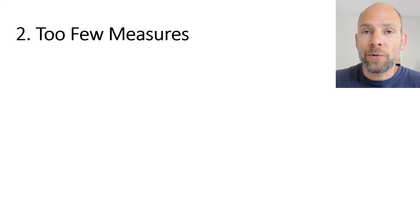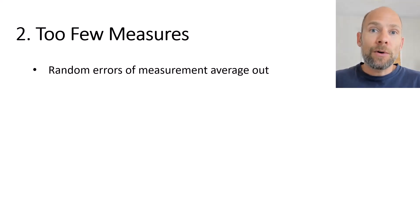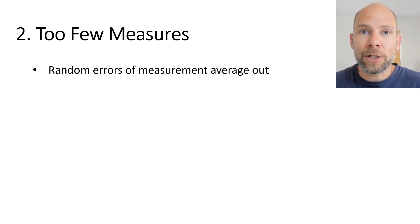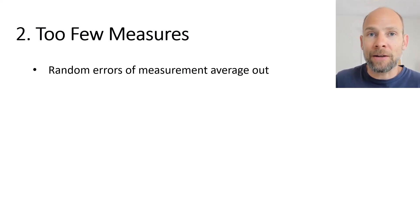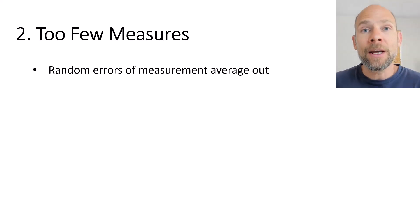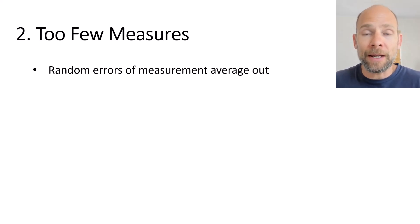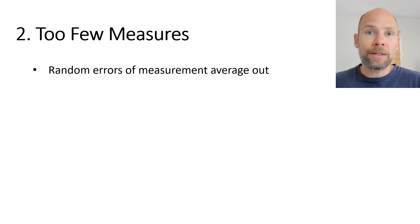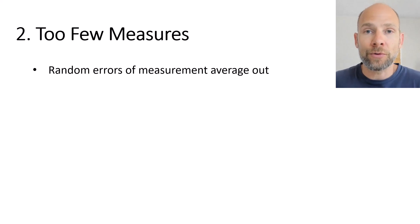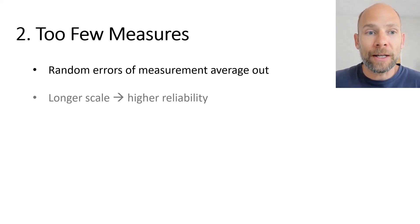Number two: the scale consists of too few measures. As we know from classical test theory, random errors of measurement average out. However, in order for that to happen, we need a sufficient number of items or subtests in our composite so that we can get rid of measurement error — some components will overestimate the true score, some will underestimate it, and those positive and negative deviations will average out as we form the sum or average of a sufficient number of components.